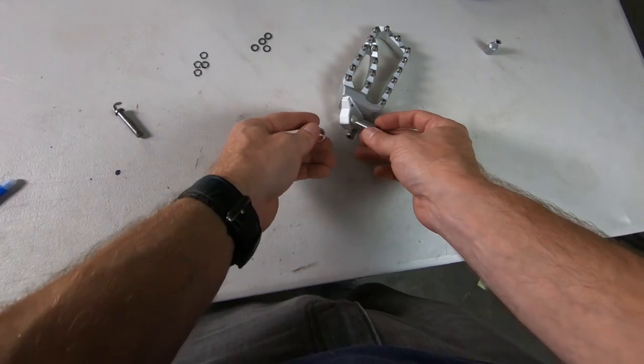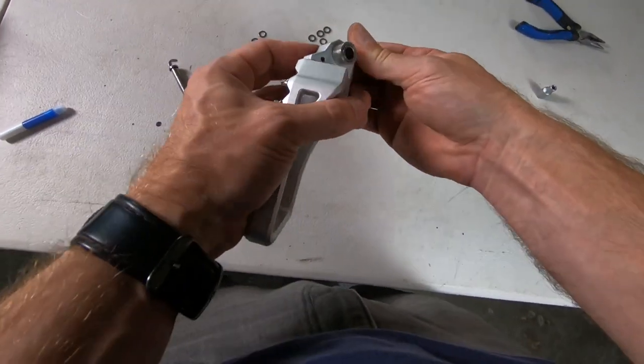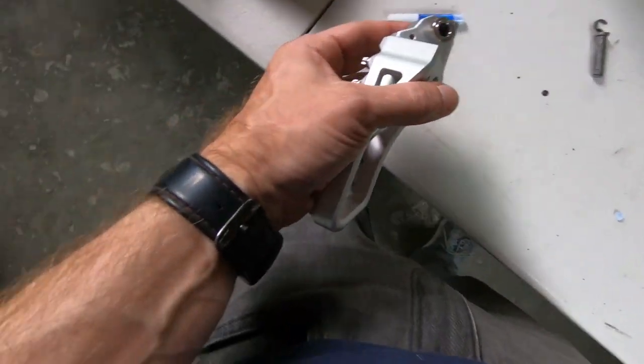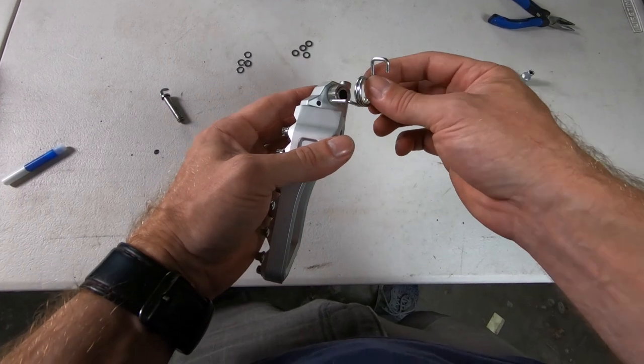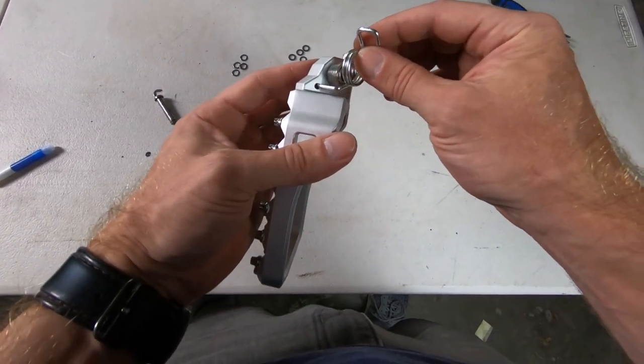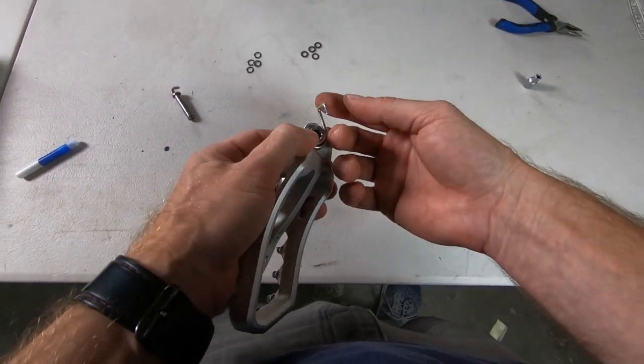Next, grab your spacer and bushing. Same concept. This goes through the peg body, the shorter fatter spacer goes around there, and then the silver spring is for the rider's left side. This part goes into the peg body, sits around the two spacers. This will wrap around the clevis.